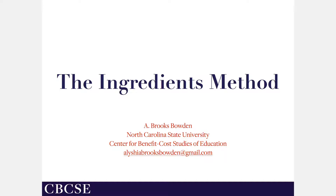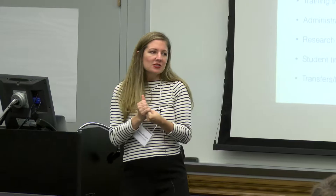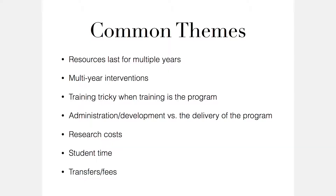I hope everybody feels like they now have some experience thinking about what the ingredients are and addressing or noticing some areas where it's gray — where it's not as clear. So I tried to put up some themes that came up. Generally we're going to have resources that last for multiple years, and we'll talk about that tomorrow — how we adjust either the quantity or the price to reflect what's used, given that the resource will last for longer than the time we're using it.